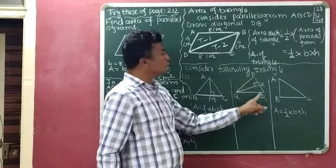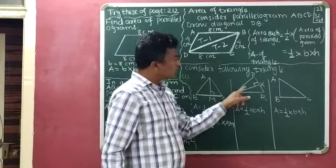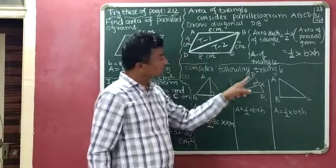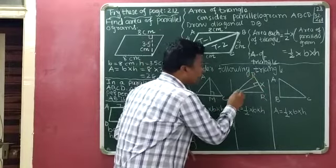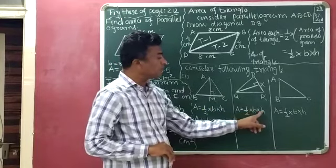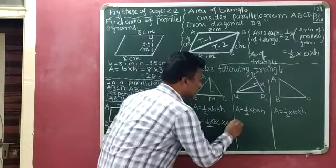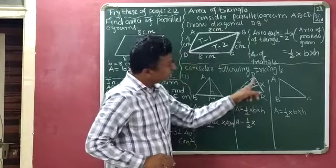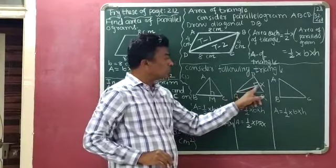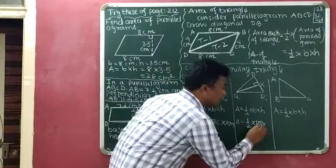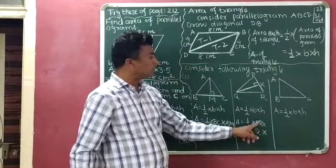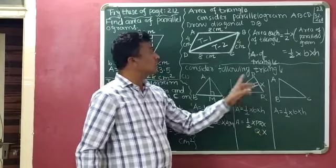Figure 2: triangle PQR is given. PR is the base of the triangle and QX is the height or altitude of the triangle. Area of triangle is equal to one-half multiplied by B multiplied by H, so area is equal to one-half multiplied by PR multiplied by QX, where PR is the base and QX is the height.